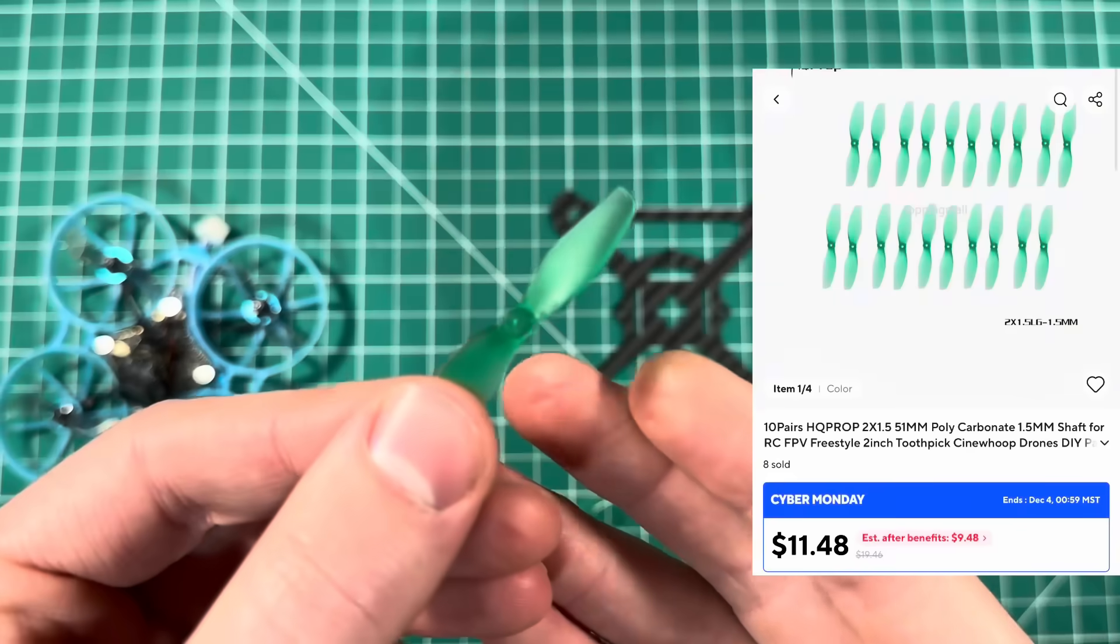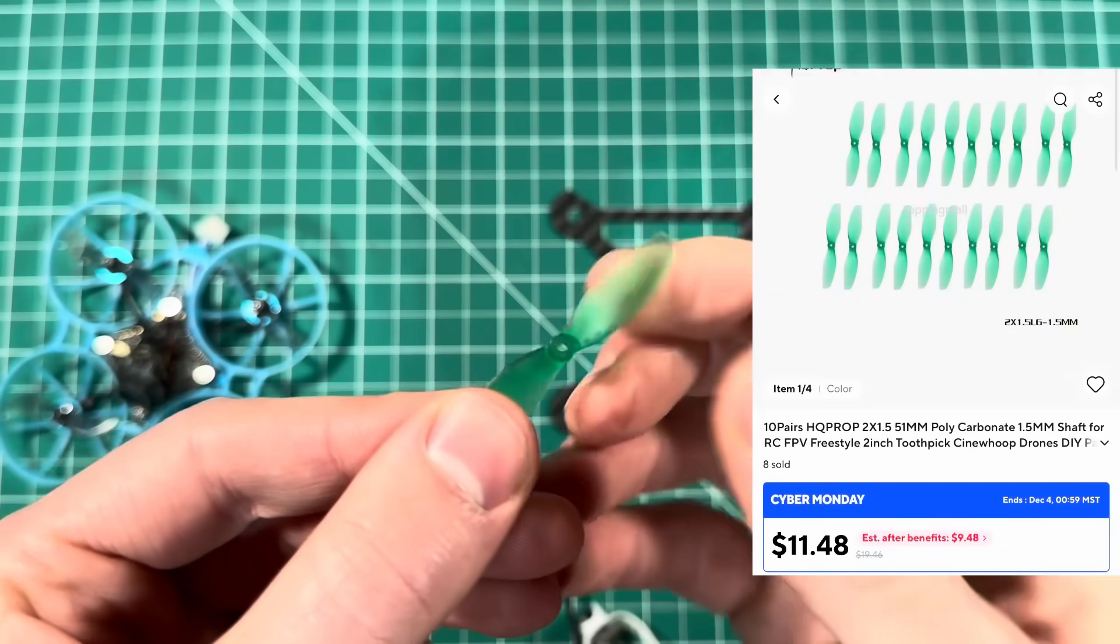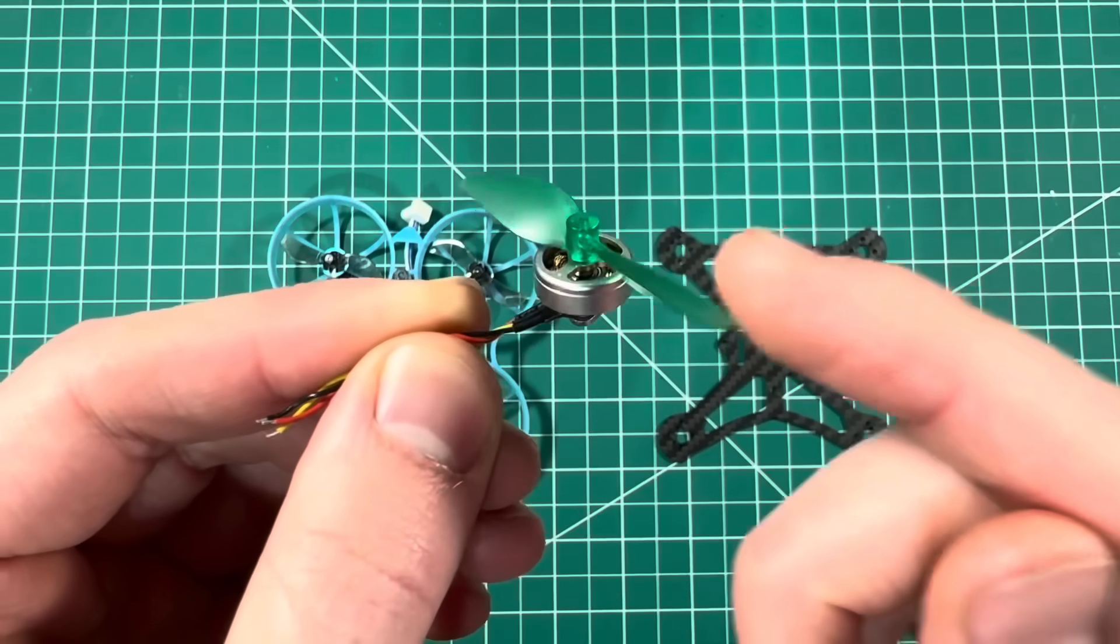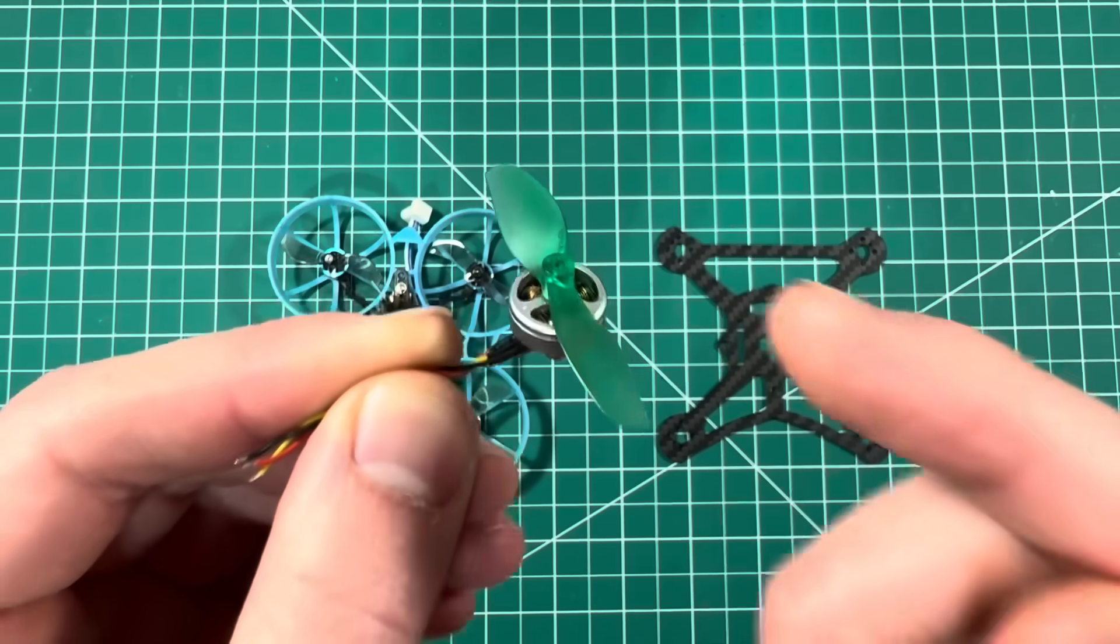Lastly, you'll just need to upgrade to 51 millimeter props. This larger motor paired with the longer props will give us a ton more lift.